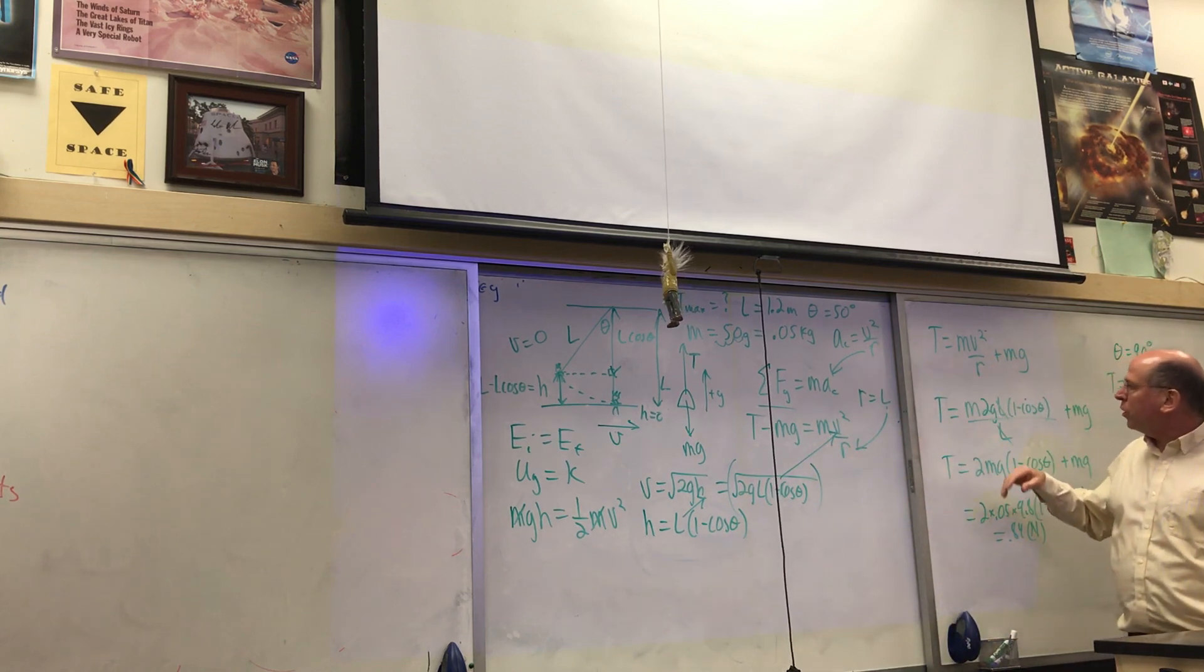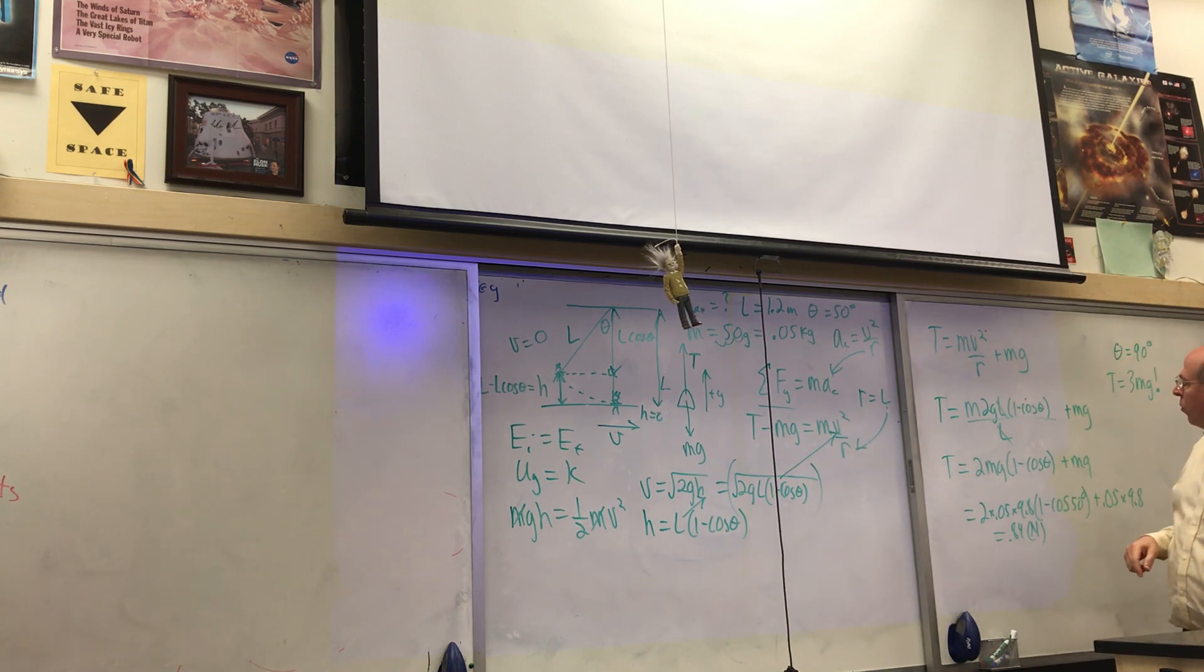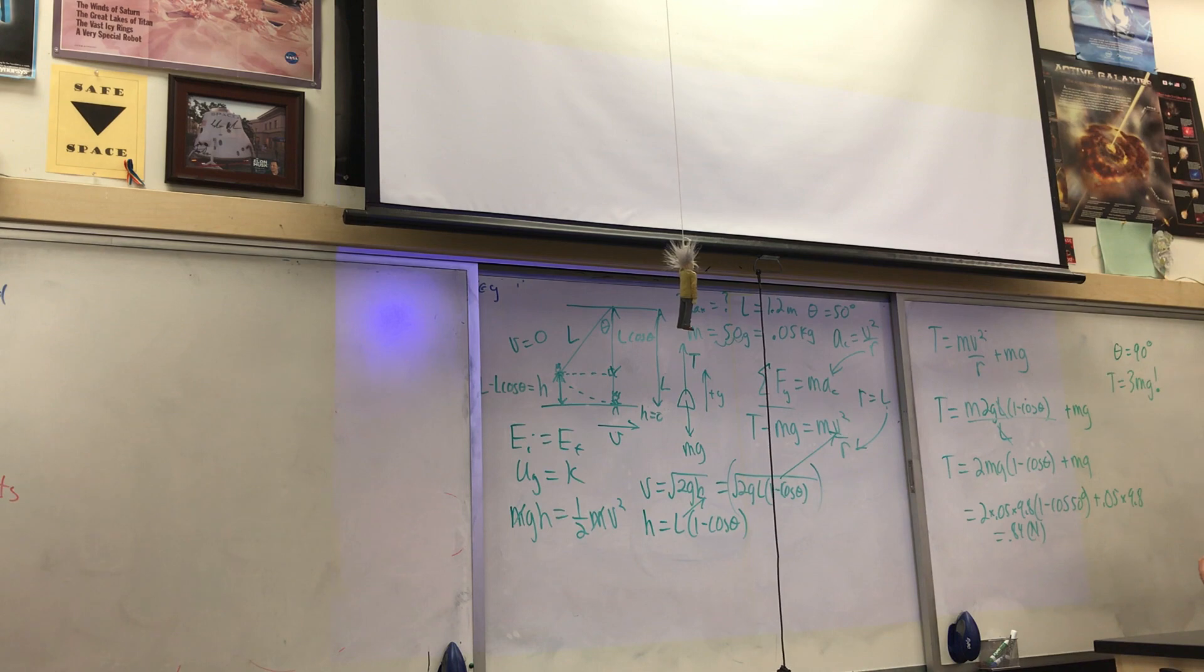So this is our equation. If I solve for tension, we substitute in for V squared, so I get 2gL(1 - cosine theta). We substituted L for R.